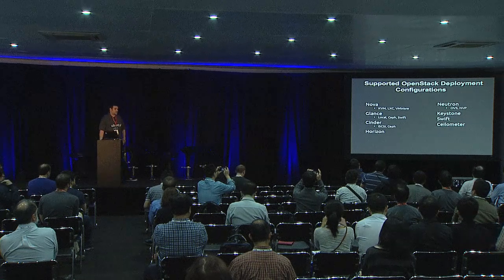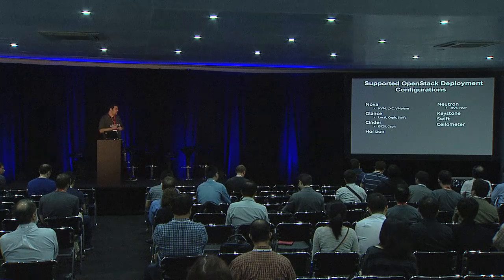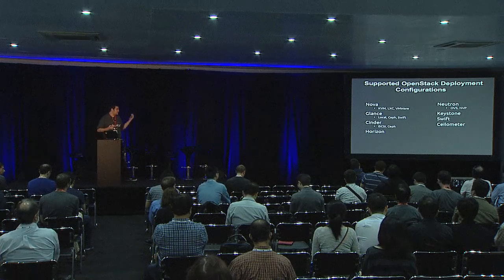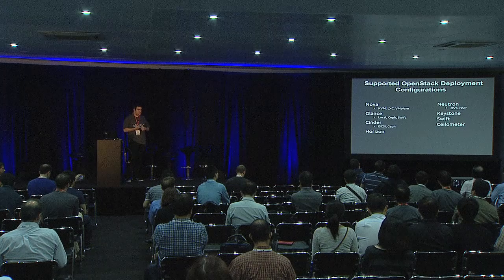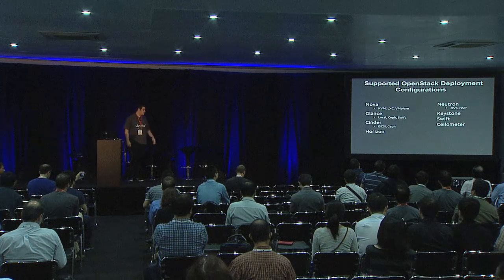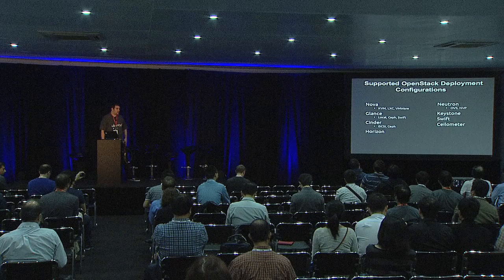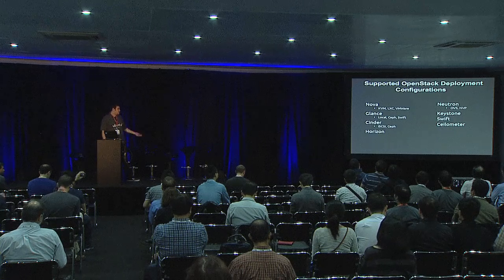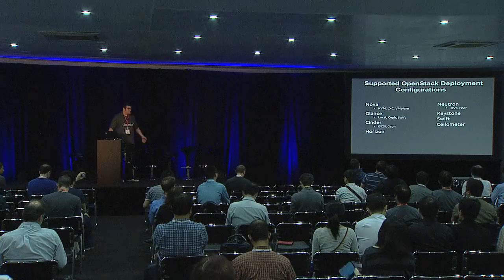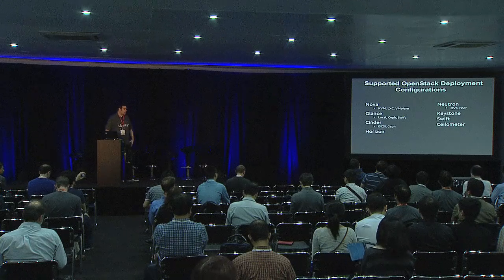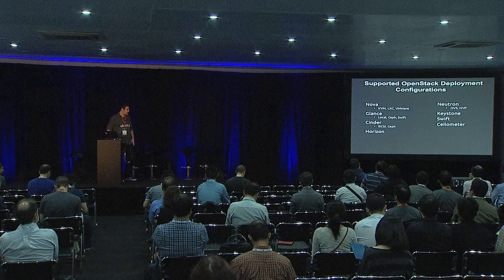Over the last six to eight months, we've been expanding those supported options to cover other things. For instance, if you're not really interested in full-blown KVM virtualization, we make it very easy to deploy Nova in a configuration that uses LXC in the back end for lightweight containerization. The same is true of storage and networking. With the work we're doing in the Interop Lab at Canonical, we're constantly extending this to support more options.